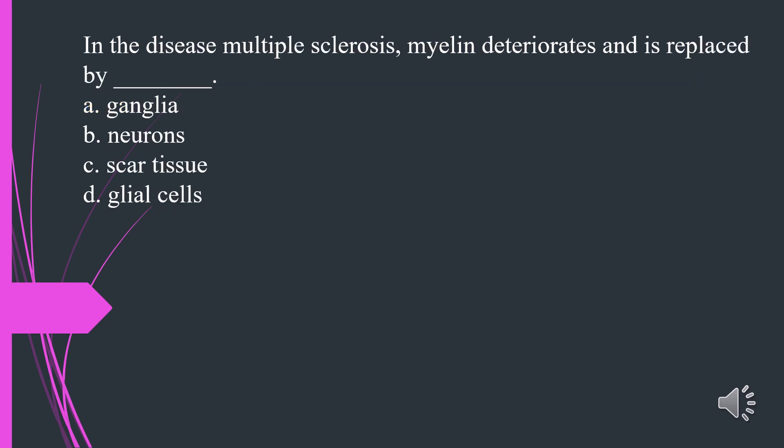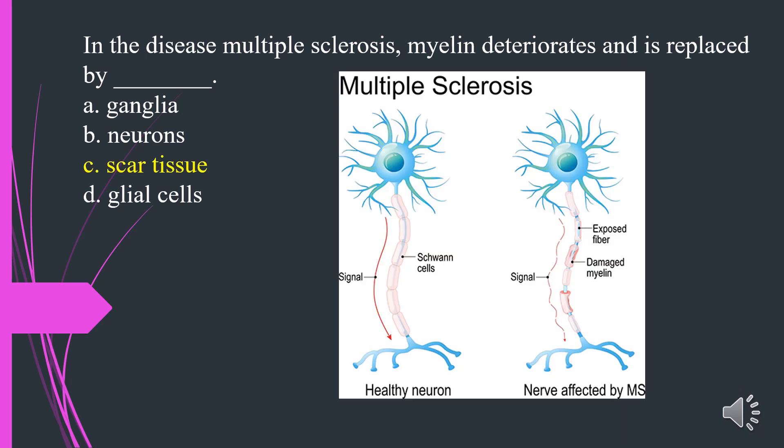In the disease multiple sclerosis, myelin deteriorates and is replaced by what? A. Ganglia. B. Neurons. C. Scar tissue. D. Glial cells. The answer is C. Scar tissue.